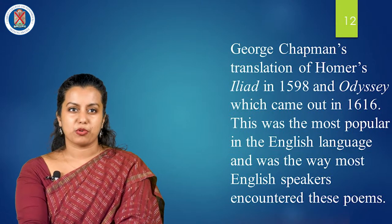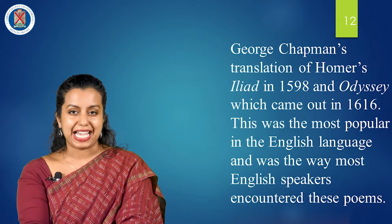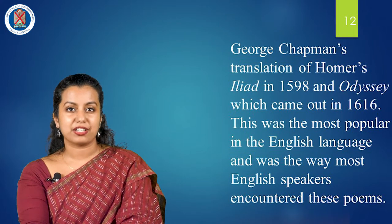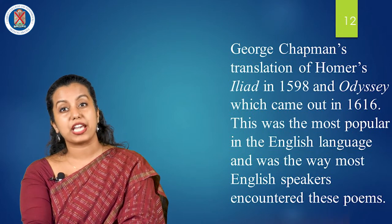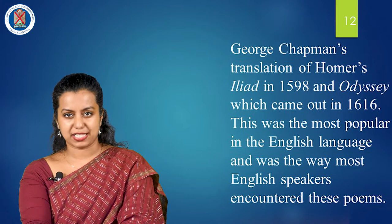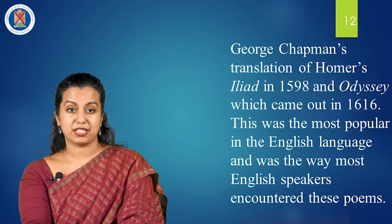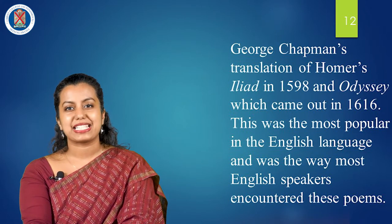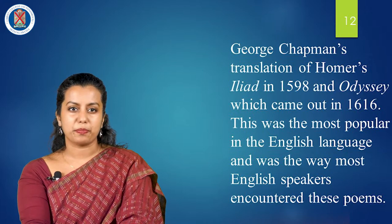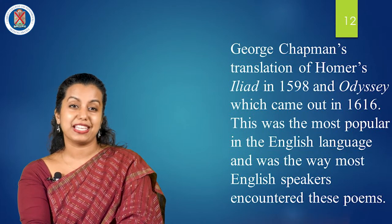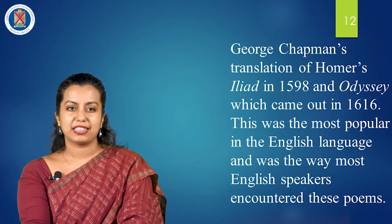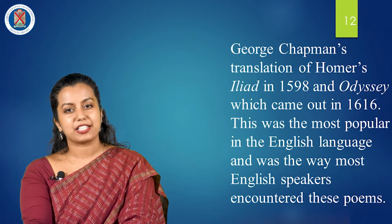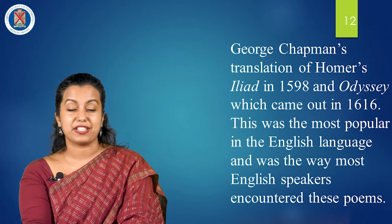Though writers like Thomas More primarily focused on their Latin scholarship by showing it off in their writings, others like Roger Ascham promoted vernacular diction rather than sprinkling foreign terms into their writings. A notable translation of the Elizabethan period was George Chapman's translation of Homer's Iliad in 1598 and the Odyssey which came out in 1616. This was the most popular in the English language and was the way most English speakers encountered these poems. This was also the first complete English translation of Homer until Alexander Pope's translations of the same, published in the 1720s.